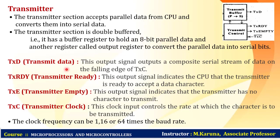The transmit data output signal sends data serially on the falling edge of the transmitter clock. Transmit ready is an output signal indicating that the transmitter is ready to accept a data character. Transmitter empty indicates the transmitter has no character to transmit. The transmitter clock input controls the rate at which characters are transmitted — the clock frequency can be 1x, 16x, or 64x the baud rate.